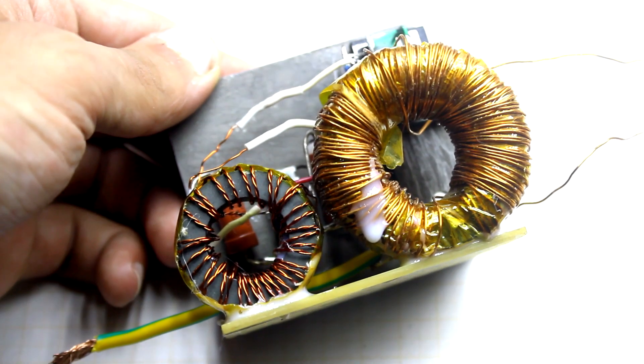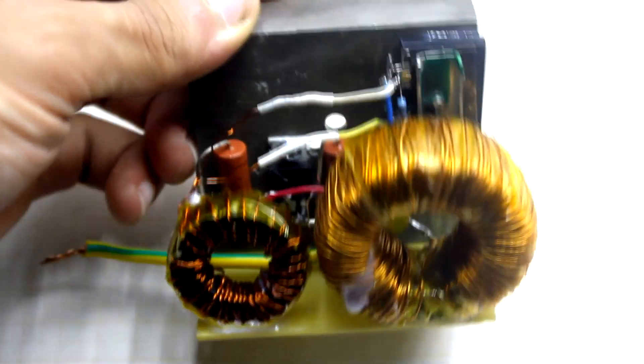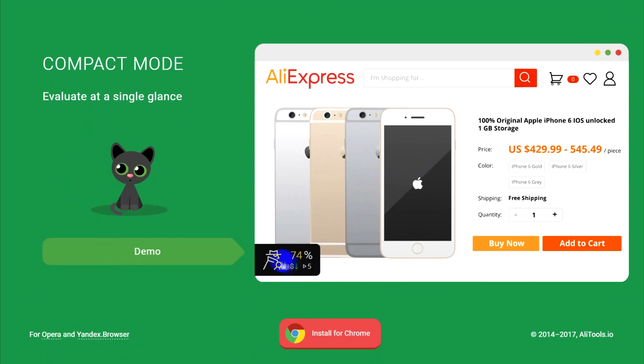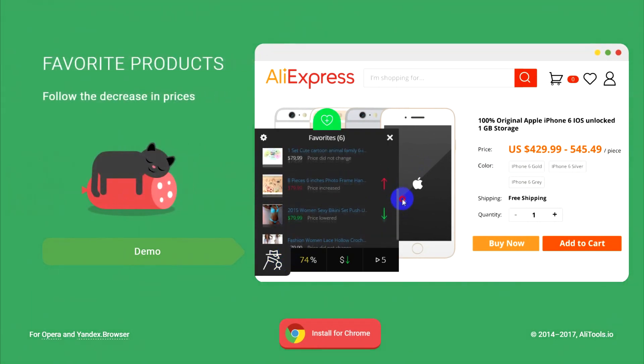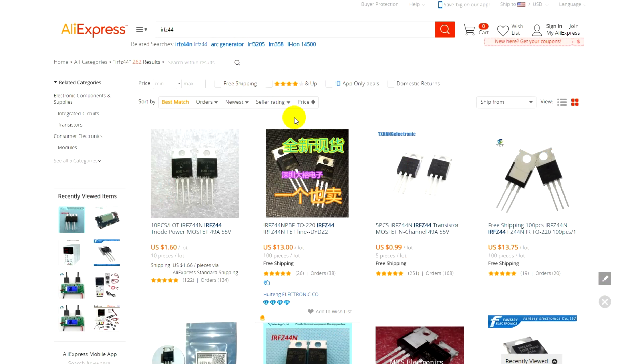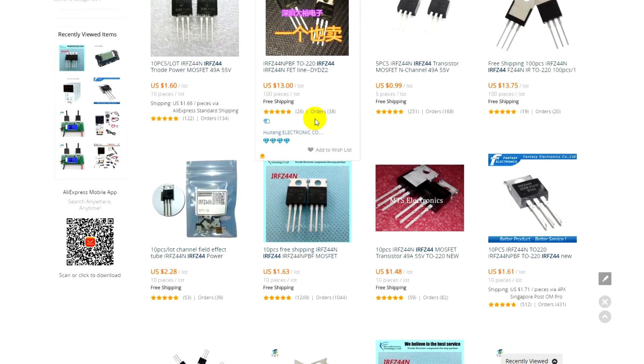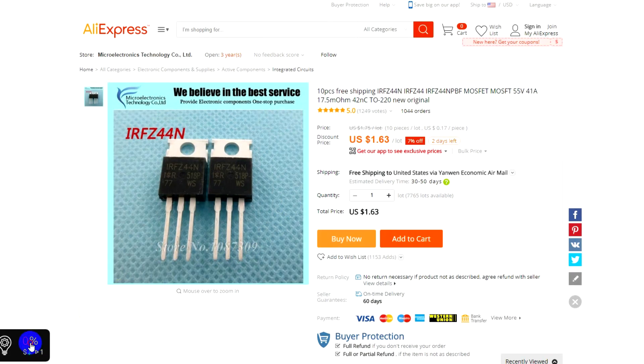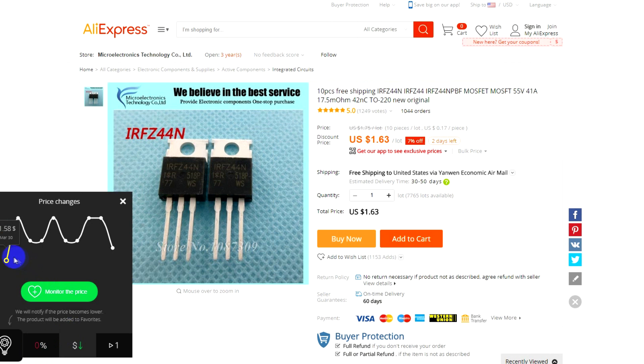You can find the right products for your criteria on AliExpress, and AliTools will help you in this case. This is a very convenient and, most importantly, trusted browser extension which will allow you to track the dynamics of price changes for a particular product, find out the seller's rating, and even track the parcel.